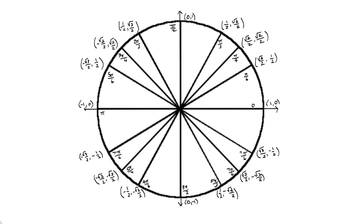Hi everyone. We've determined the coordinates of all the standard angles on the unit circle, and now we're going to take the big leap: how do we determine what the trigonometric functions are — the values of the trig functions — for each one of these standard angles on the unit circle.